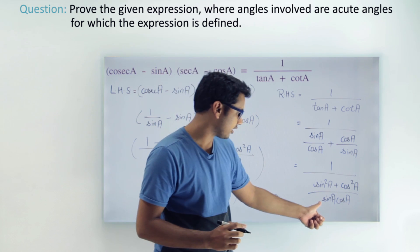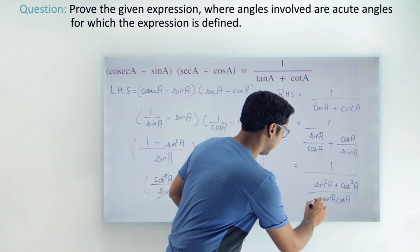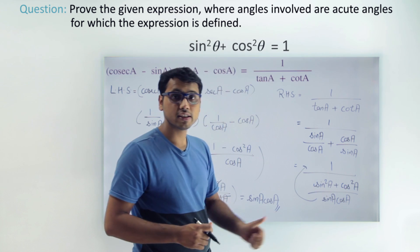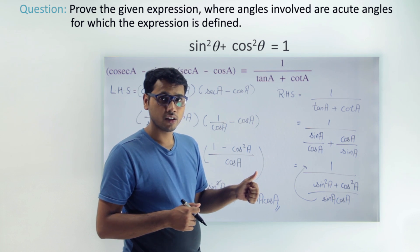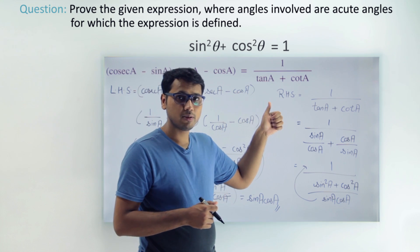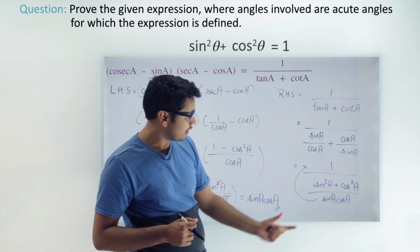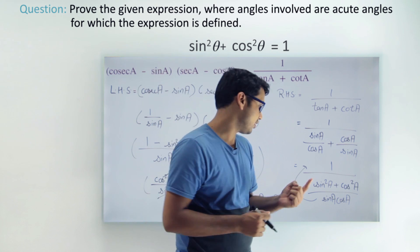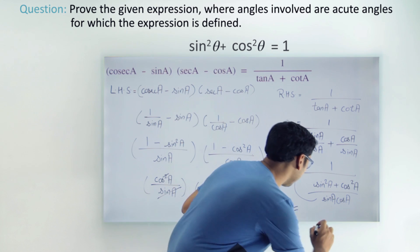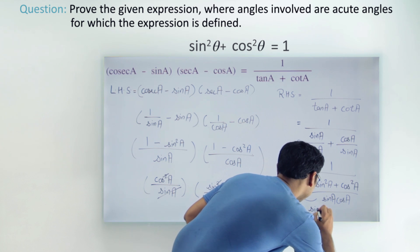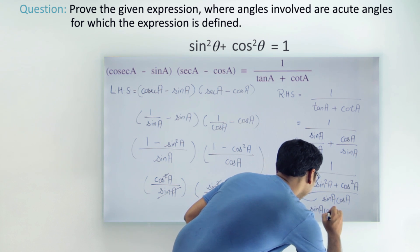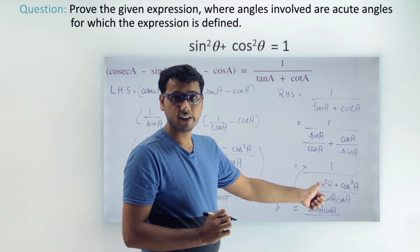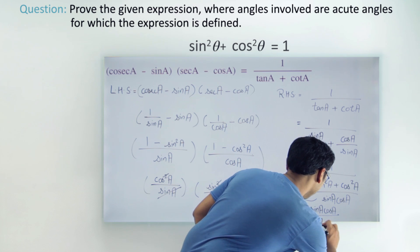The denominator expression (sin a times cos a) goes to the numerator. And sin squared a plus cos squared a — by our first identity — equals 1. So the RHS simplifies to sin a times cos a over 1, which is simply sin a times cos a.